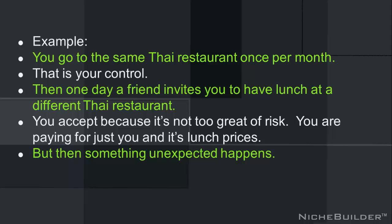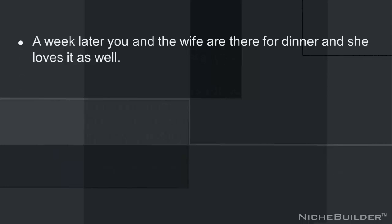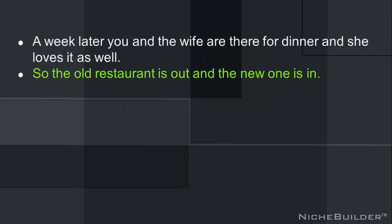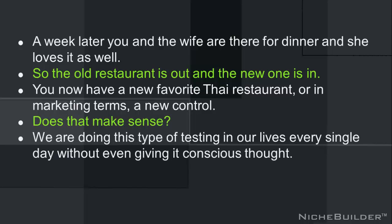But then something unexpected happens. You love the new restaurant and the food is nothing short of amazing. So a week later, you and the wife are there for dinner and she loves it as well. So the old restaurant is out and the new one is in. You now have a new favorite Thai restaurant, or in marketing terms, a new control. We're doing this type of testing in our lives every single day without even giving it conscious thought.